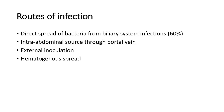The routes of infection can be from direct spread of bacteria from the biliary system infections such as ascending cholangitis, or empyema of the gallbladder in cases of gallbladder inflammation. This direct spread is the most commonly seen route, accounting for around 60% of all cases.